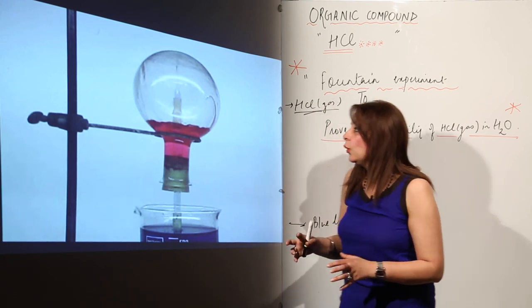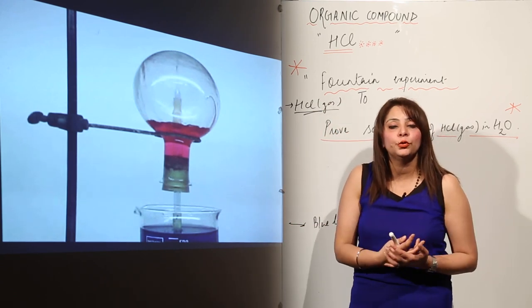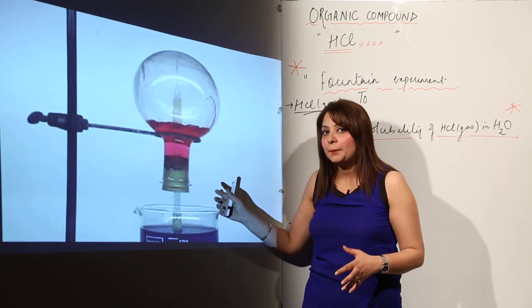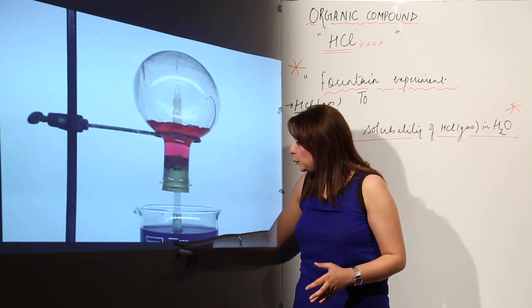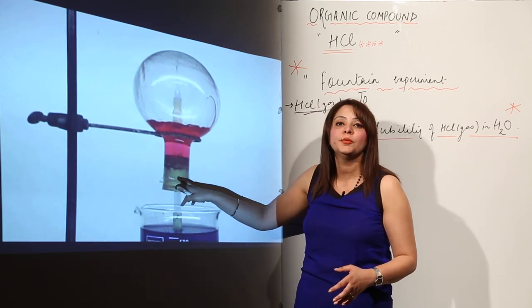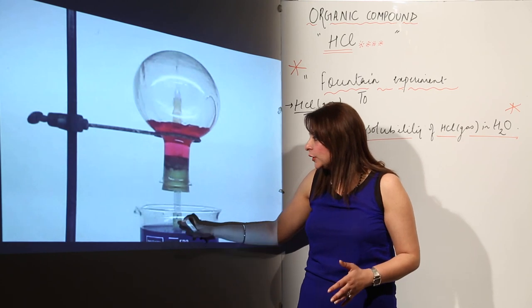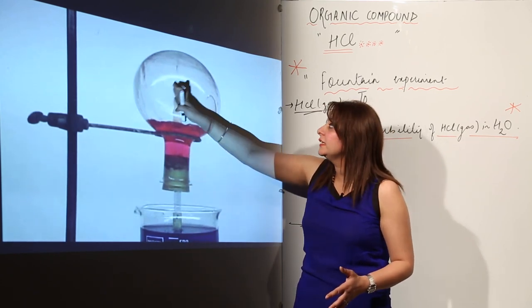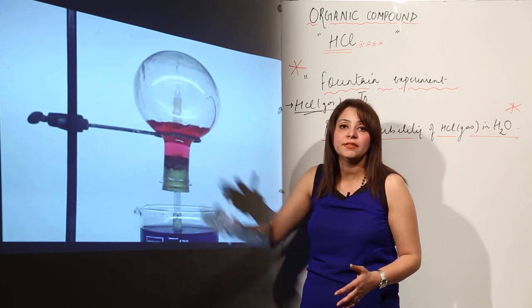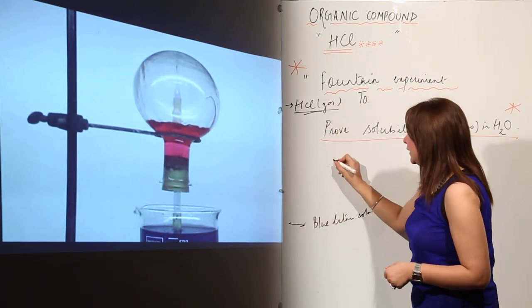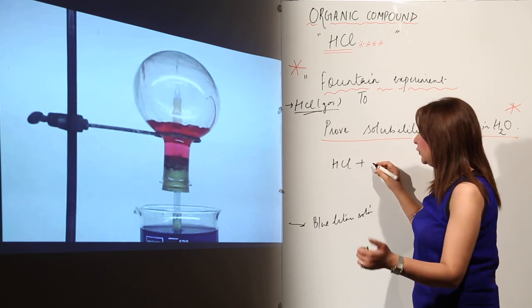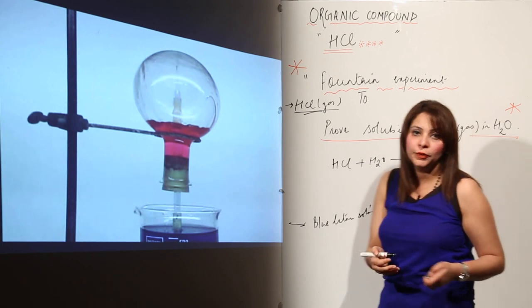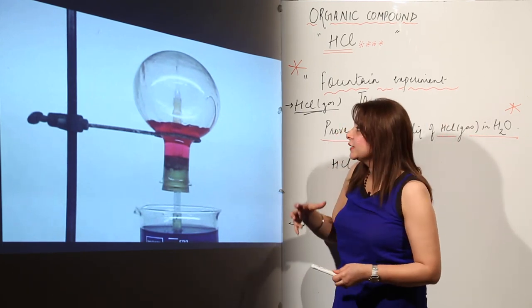To prove the solubility of HCl gas, we press the dropper. When we press the dropper, the blue litmus solution rises up from the jet tube. As this blue litmus solution rises up through the jet tube and enters the round bottom flask containing HCl gas, the HCl gas dissolves in the water.